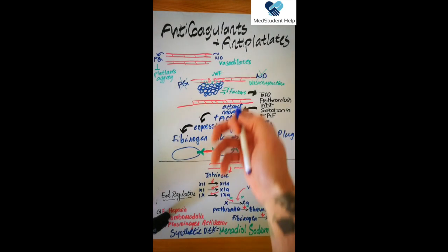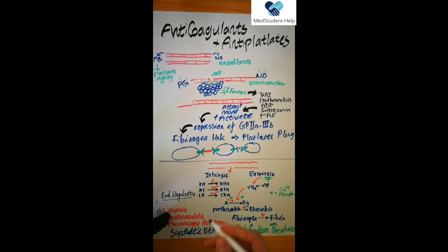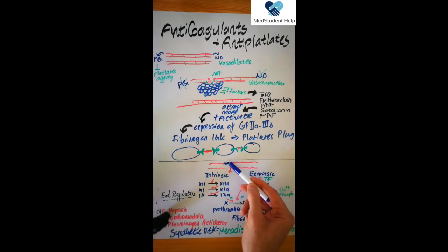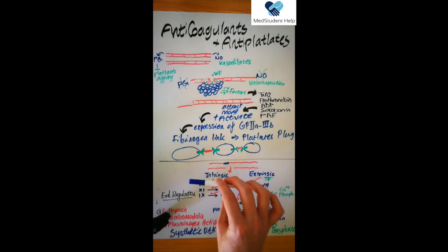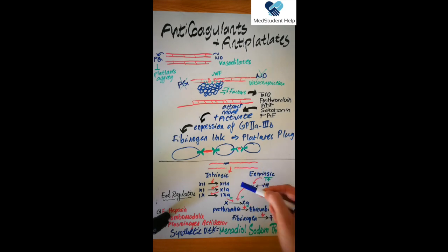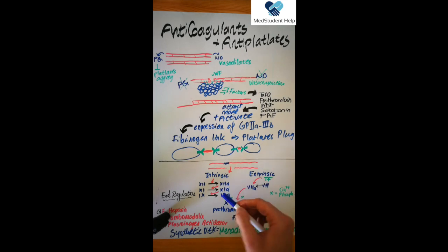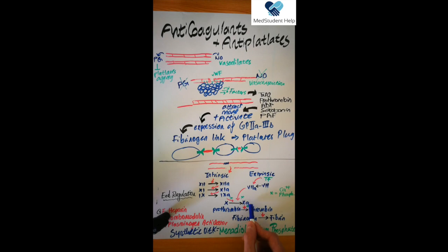If the platelet plug is not enough, or if there is a more severe injury to the blood vessel, collagen fibers can be exposed to the circulation. Exposure of collagen leads to activation of the intrinsic pathway of coagulation. The first factor activated is factor 12; activated factor 12 activates factor 11; activated factor 11 activates factor 9; and then factor 9, with the help of other factors, activates factor 10.